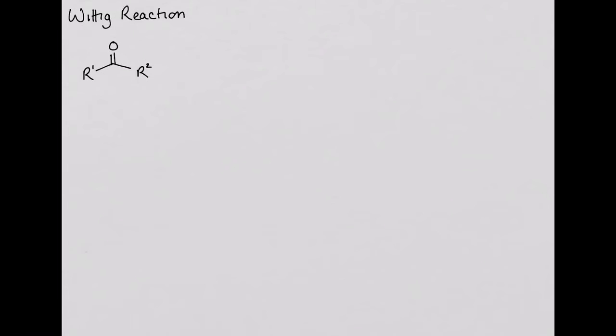This video will cover the Wittig reaction. The Wittig reaction is another example of a carbon-carbon bond forming reaction. The new carbon-carbon bond is a carbon-carbon double bond formed between the carbon of a carbonyl containing compound — an aldehyde or a ketone — and the carbon of something called a phosphorus ilid.